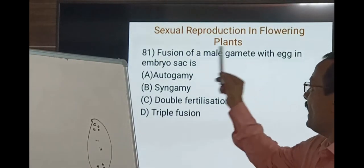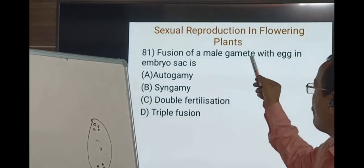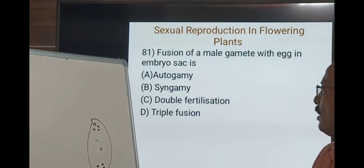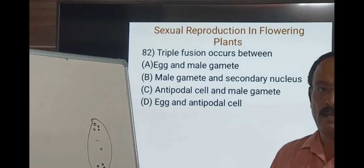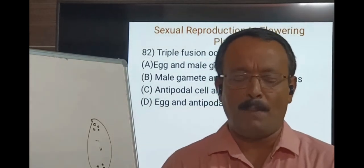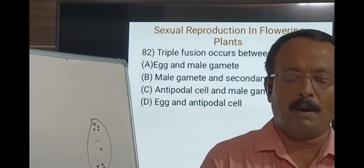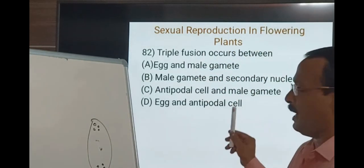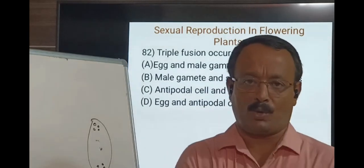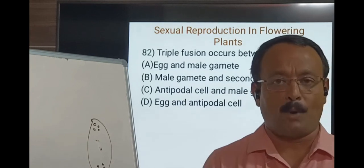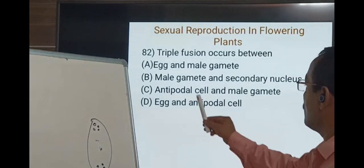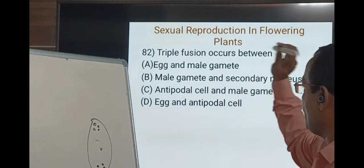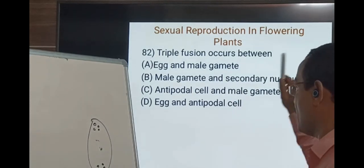Question 81: Fusion of the male gamete with the egg in the embryo sac is called syngamy. Question 82: Triple fusion occurs between the second male gamete and the two haploid polar nuclei present in the central cell to form the triploid primary endosperm nucleus. The options include egg and male gamete, or male gamete and secondary nucleus — the correct answer is B: male gamete and secondary nucleus (polar nuclei).